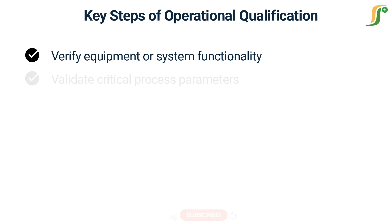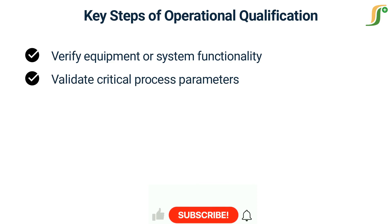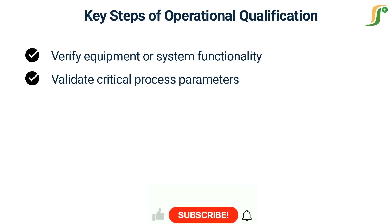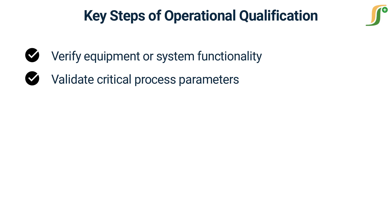Step two: Validate critical process parameters. OQ includes verifying and validating critical process parameters, such as temperature, pressure, time, speed, and other relevant parameters, to ensure that they are within the predefined acceptable ranges. This helps to ensure that the equipment or system is capable of consistently producing the desired quality product.